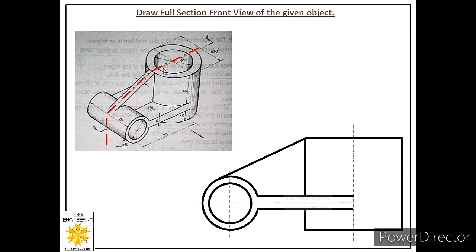Now we show the hole as hidden. The diameter of that hole is 50. From the end line we measure 25 millimeters on both sides, mark points, and sketch dashed medium lines to represent that through hole of diameter 50. We are now ready with the front view of this object.